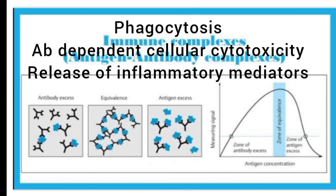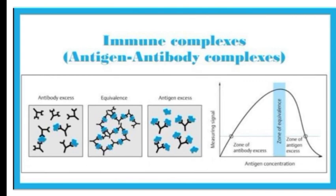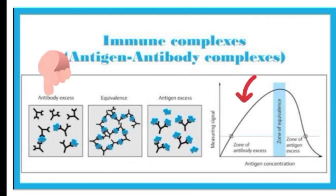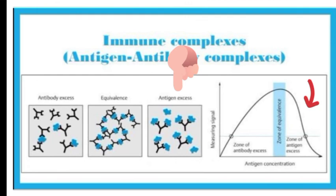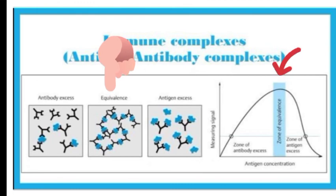The immunocomplex also depends on the antigen-to-antibody ratio. The ratio between antigen and antibody influences the detection of antigen-antibody complexes because the size of complexes formed is related to the concentration of antigen and antibody. When antibody is in excess, the complexes will be small. When antigen is in excess, complexes will also be small. But when antibody and antigen are present in equivalent numbers, they form a large antigen-antibody complex.